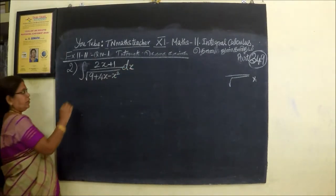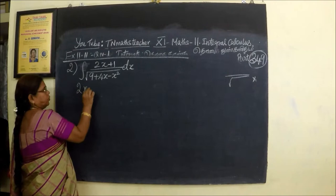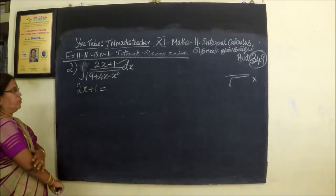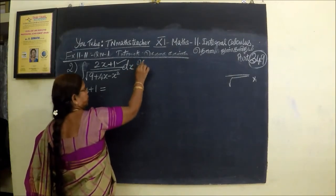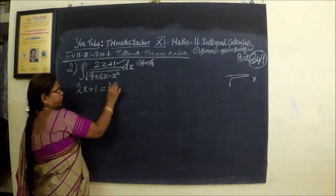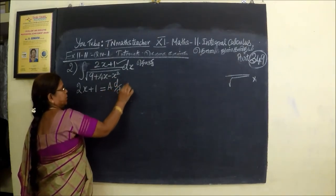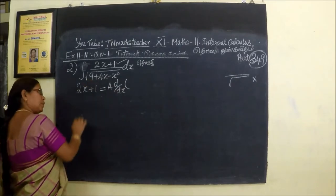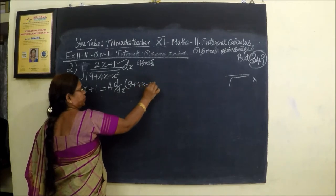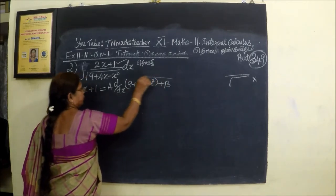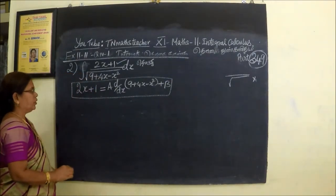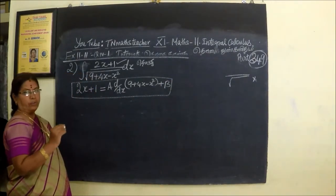Now we are considering 2x plus 1. We are considering the numerator and the denominator: 9 plus 4x minus x squared by x plus b. We want to find the value of a and b.